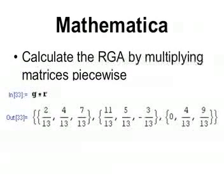Lastly, we can calculate the RGA by multiplying the matrices G and R piecewise according to the formula lambda IJ equals G IJ multiplied by R IJ. In Mathematica, we multiply the two outputs of the matrices that we originally calculated. The resulting matrix should be exactly as the one shown here. Another way to check is to verify that all of the columns and rows should add to one.